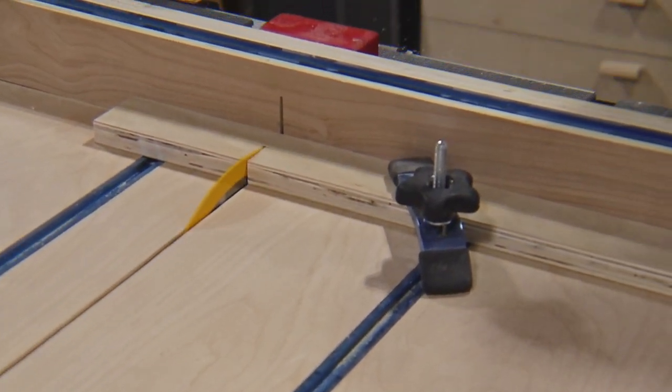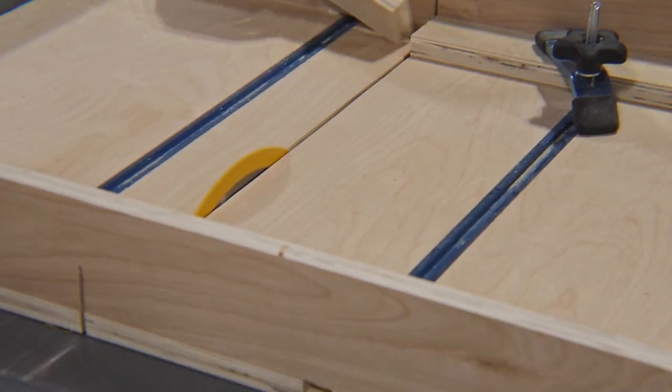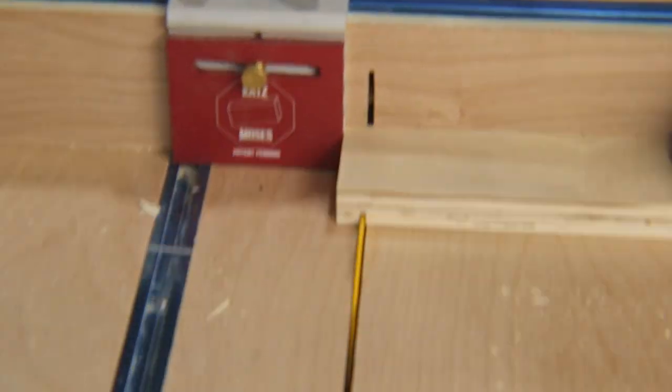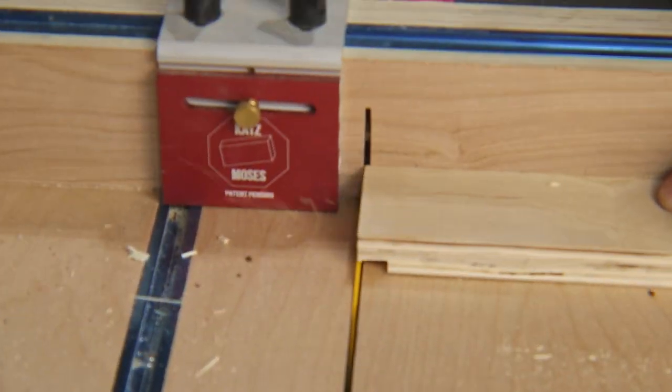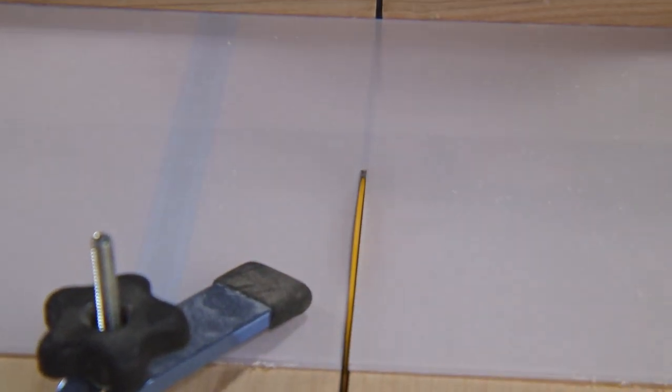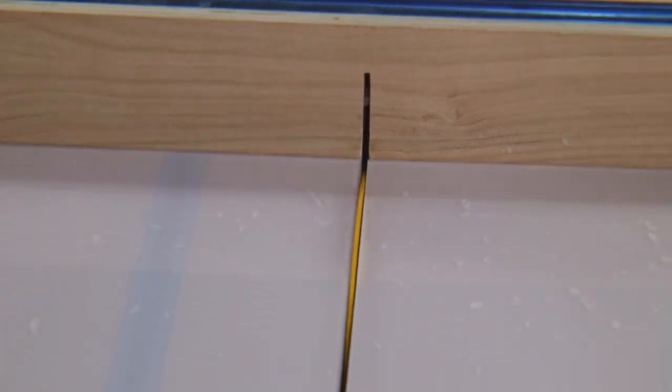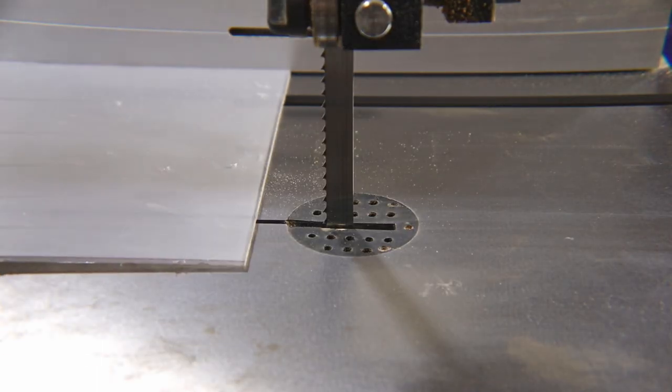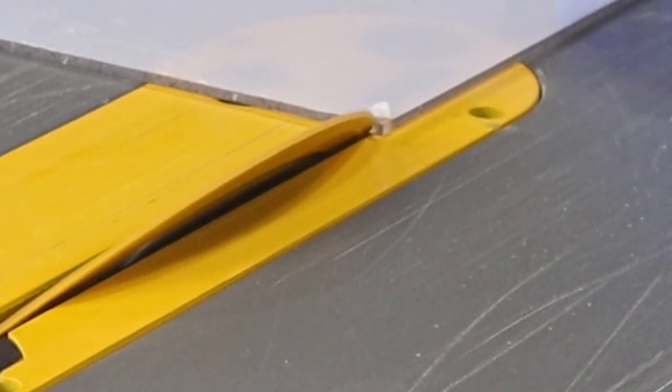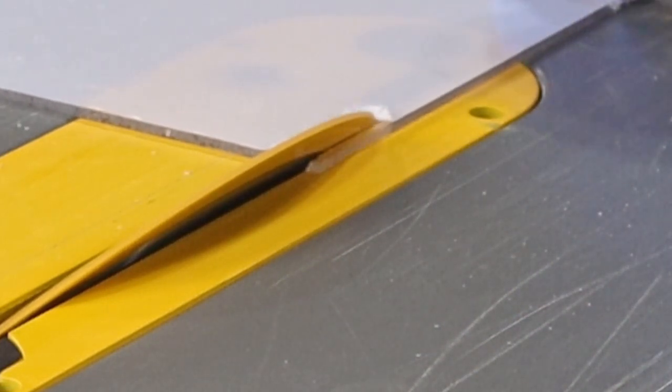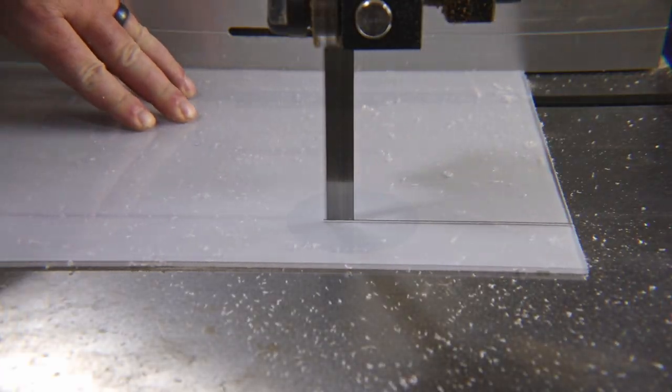Now I can cut them all to their correct lengths on the crosscut sled, and then set up a stop block to cut all the tenons. The doors will also have some plexiglass, so I can cut that while I'm here as well. The long cut on the plexiglass seems to work better with the bandsaw. I've noticed that the plexiglass wants to hop on the table saw, so I tried it out on the bandsaw and it worked much better.